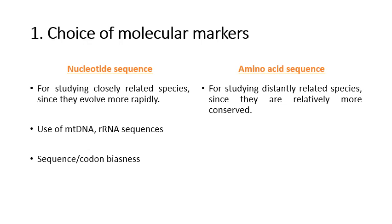Keep in mind the concept of codon biasness in different species. If you recall from introduction to molecular biology, a single amino acid can have more than one codon — leucine can be coded by six different codons, arginine by six, and valine by four. However, a species will typically use only one codon for an amino acid. So if you are comparing different species and find variation in sequences because of codon biasness, that variation is not attributable to evolution — it's just because of codon biasness, so you have to be careful about that.